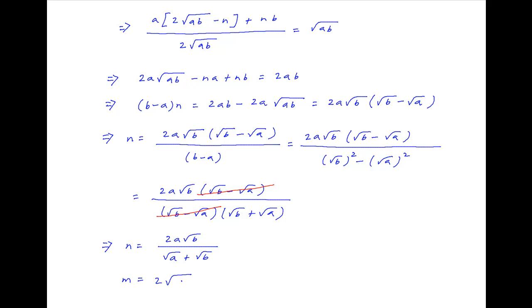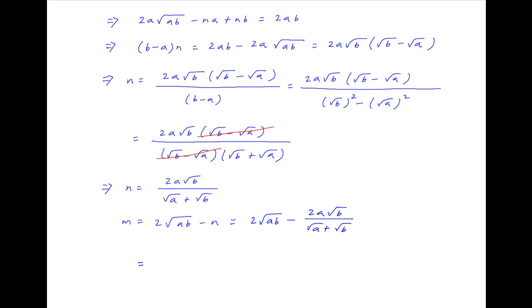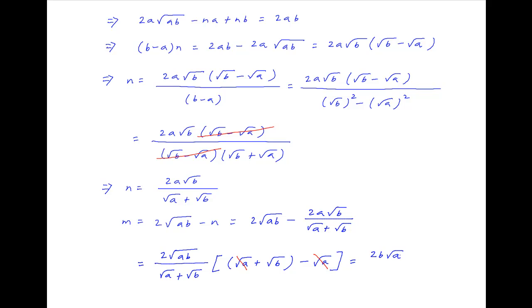Therefore M, which equals 2√(AB) - N, is equal to 2√(AB) - 2A√B/(√A + √B). Simplifying, this equals 2A√(AB)(√A + √B) - 2A√B all divided by (√A + √B). After cancellation inside the brackets, the value of M is equal to 2B√A divided by (√A + √B).